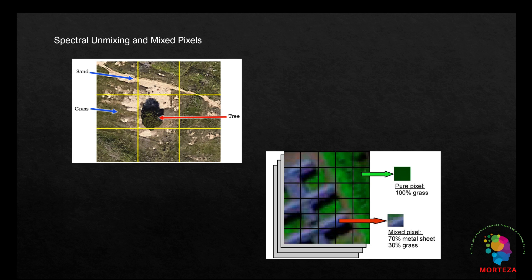For example, in remote sensing, a single pixel might capture a mixture of water, soil, and vegetation. The spectrum obtained from that pixel is not a simple reflection of one of these materials but a weighted combination of their spectral signatures. This presents a challenge in applications like land cover classification, mineral exploration, and environmental monitoring.